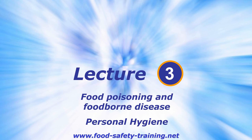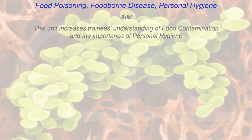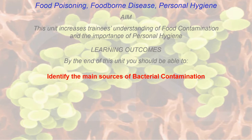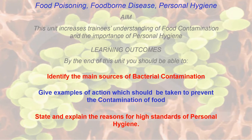Let's go into lecture three which is food poisoning, foodborne disease and personal hygiene. The aim of this unit is to increase your understanding of food contamination and the importance of personal hygiene. By the end of this unit you will be able to identify the main sources of bacterial contamination, give examples of actions which should be taken to prevent contamination of food, and state and explain the reasons for high standards of personal hygiene.